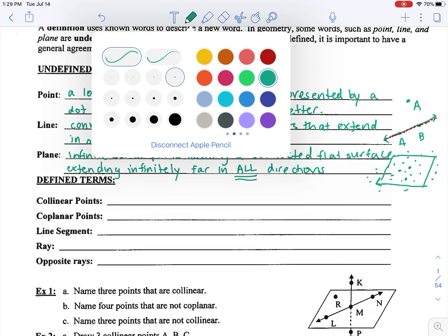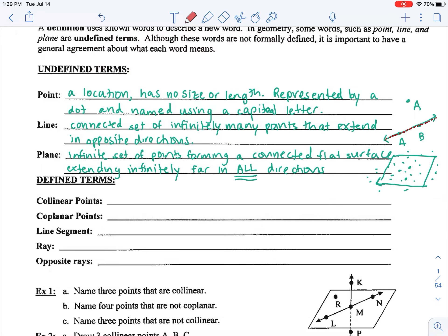From those three undefined terms, we're now going to define what collinear points are. Collinear has the word 'co' in it, which means 'with' when we do word dissection, so with a line. I'm going to abbreviate points as P-T-S. Collinear means points that lie on the same line.